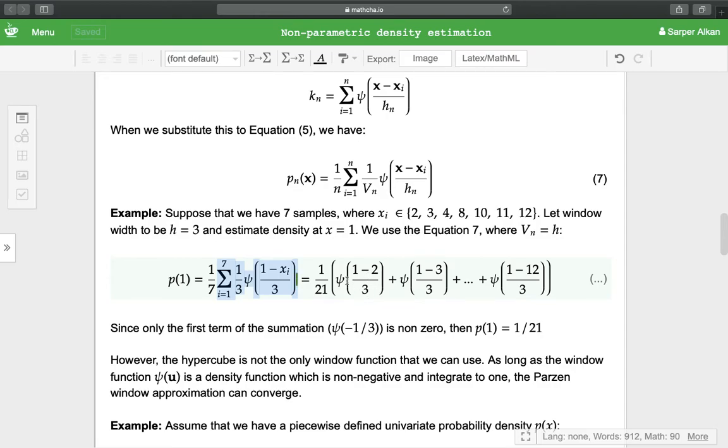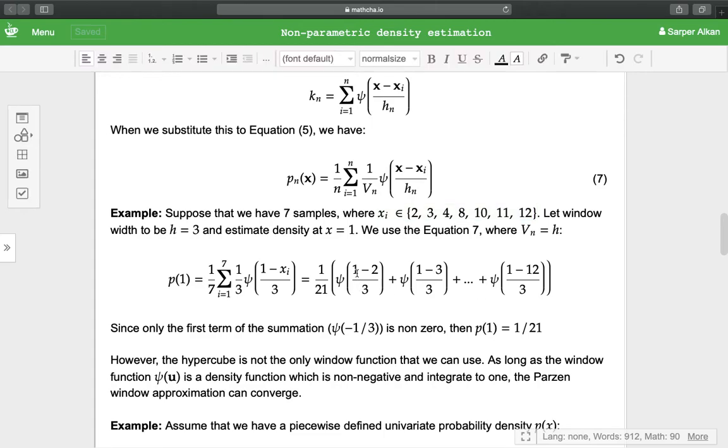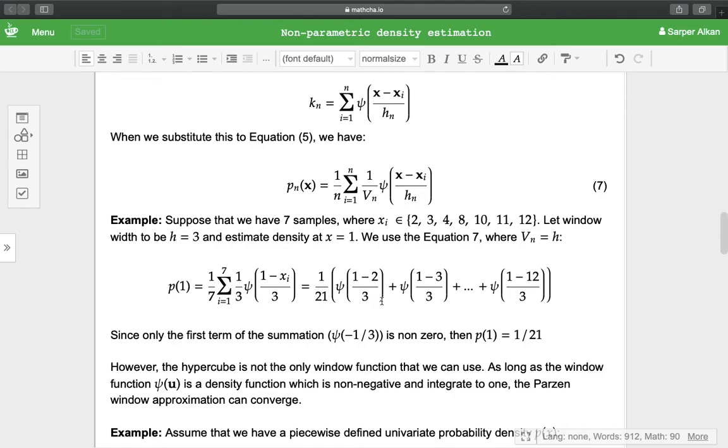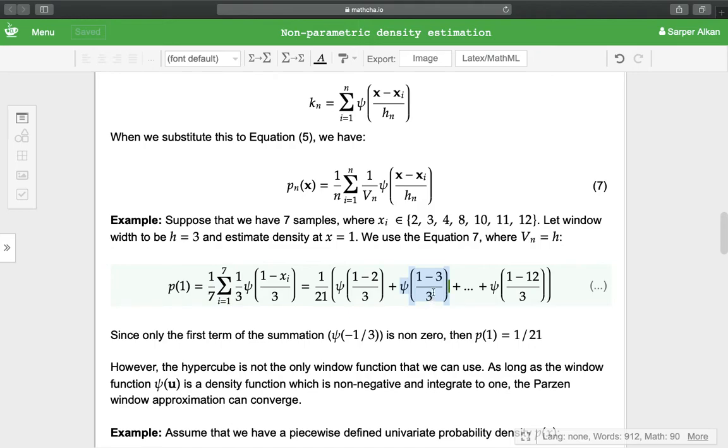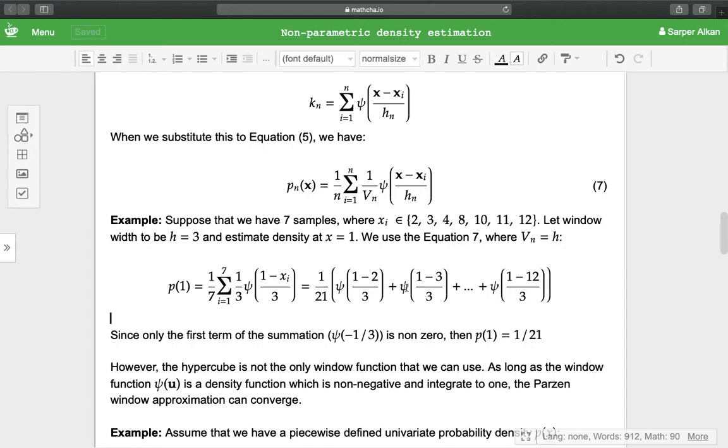So we do this for all the points in the summation: φ((1-2)/3), φ((1-3)/3), to φ((1-12)/3). Since φ((1-2)/3) = -1/3, that's less than 1/2, the absolute value is less than 1/2. However, after the second component, which equals -2/3, the absolute value is higher than 1/2, so from this point on, all of the terms are 0.